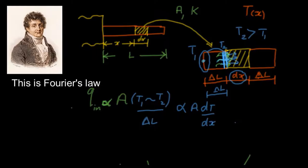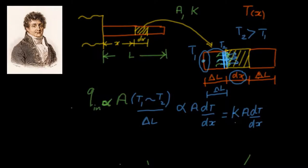To eliminate the proportionality, we introduce the constant K — thermal conductivity. So the heat entering is K·A·dT/dx. This is actually Fourier's law of heat conduction. They usually put a negative sign, but let me suspend that for now. That is the magnitude of heat entering through that region.